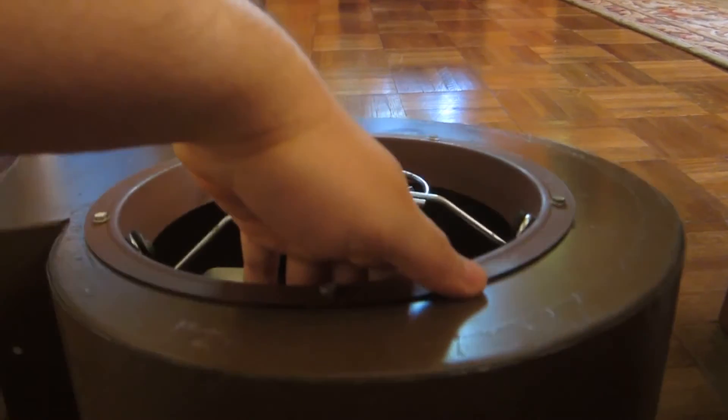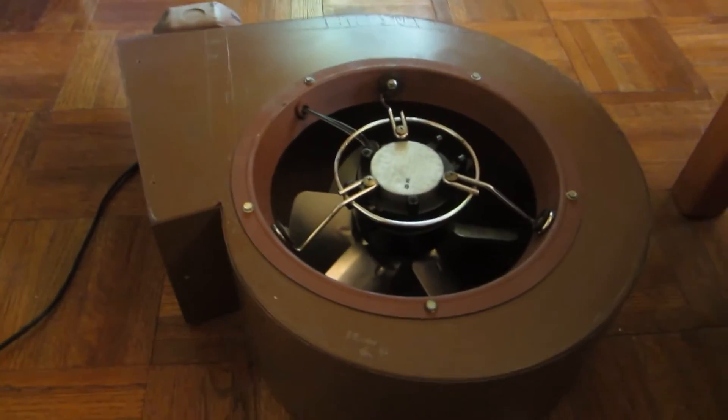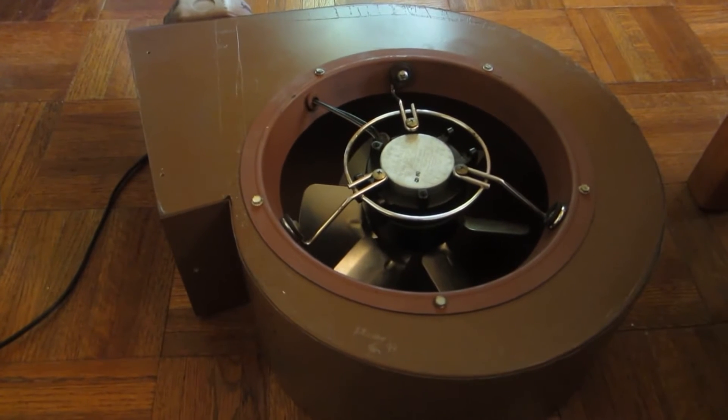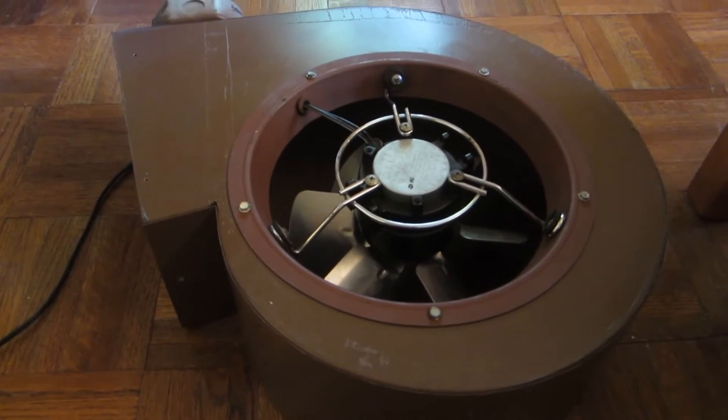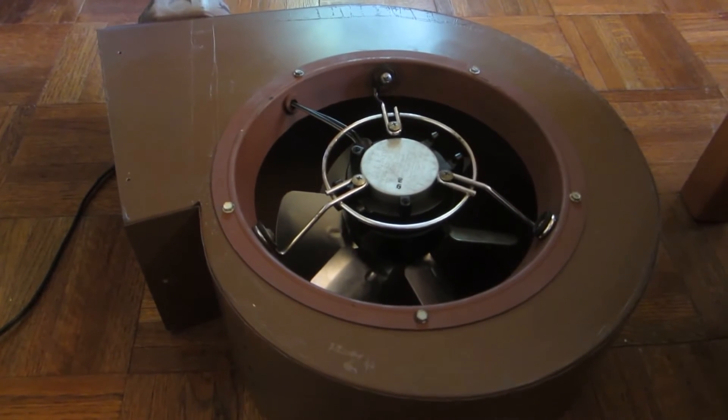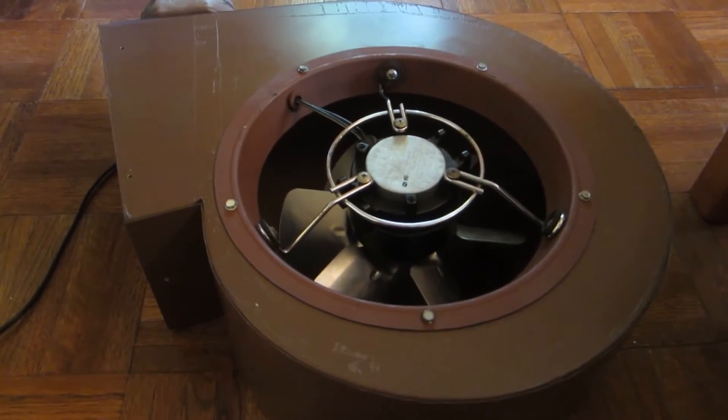As you can see here, this has a solid top to prevent the blades from stalling when the elevator is accelerating or decelerating, therefore making this suitable for high-speed elevators. Also, with the high output 400 to 500 cubic feet per minute airflow, this makes this type of fan suitable for larger cabs as well as high-speed elevators.